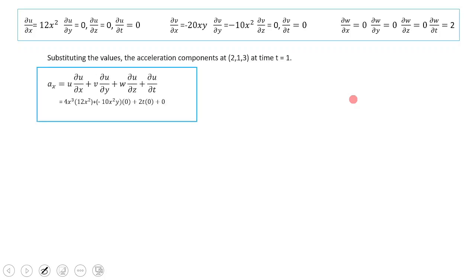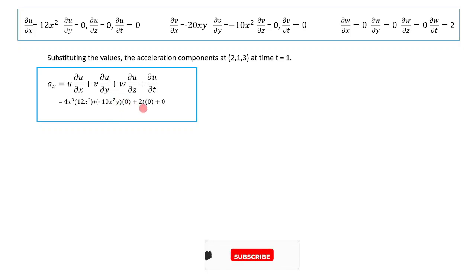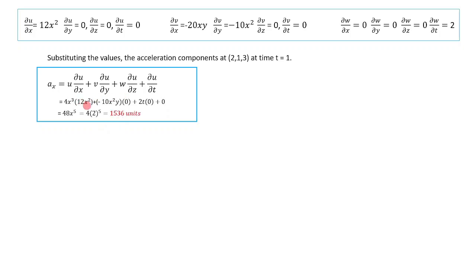Now substituting into ax: u is 4x cubed, ∂u/∂x = 12x squared, plus v = minus 10x squared y, ∂u/∂y = 0, plus w = 2t and ∂u/∂z = 0, plus ∂u/∂t = 0. Putting in x = 2, y = 1, z = 3, t = 1, we finally get ax = 1536 units, which is the acceleration component in the x direction.